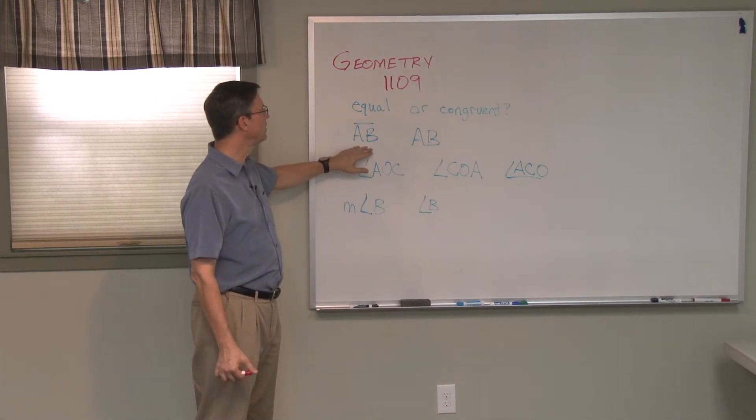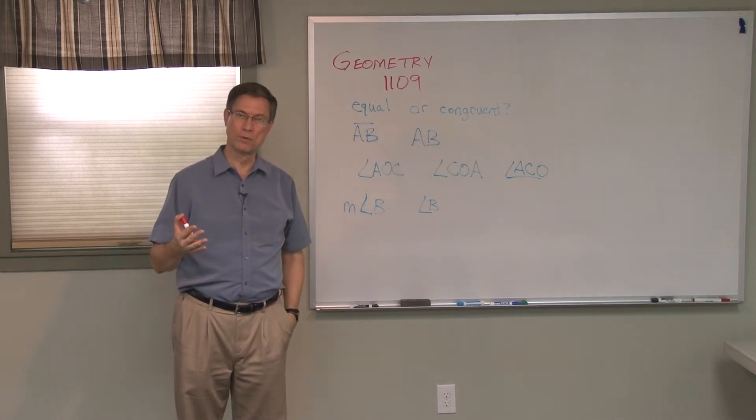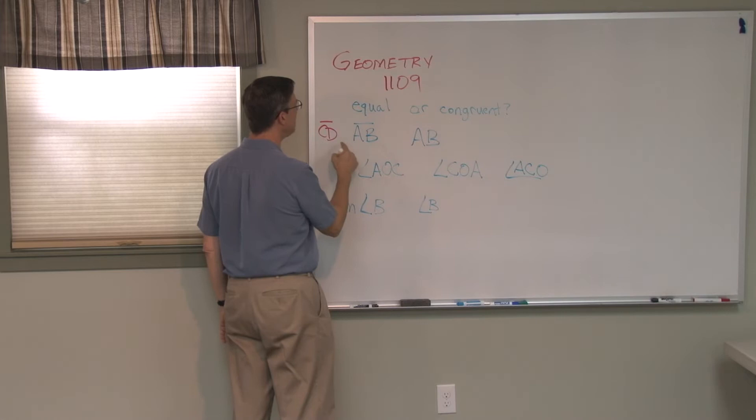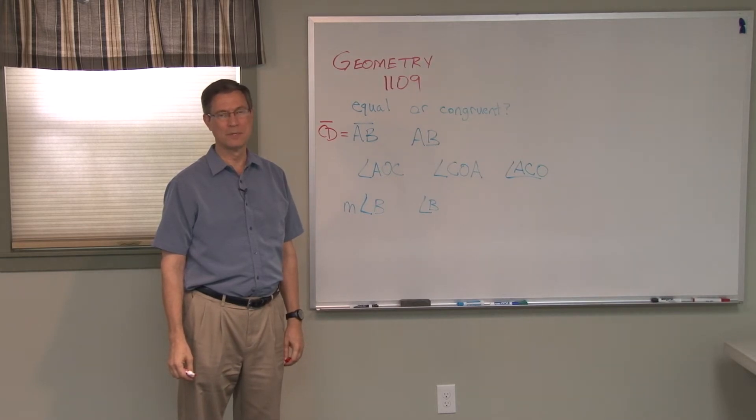Now if we're talking about line segments, if we put the bar over top of AB, we are talking about the shape. So if we're comparing AB with line segment CD and we say they are the same, we don't say they're equal.